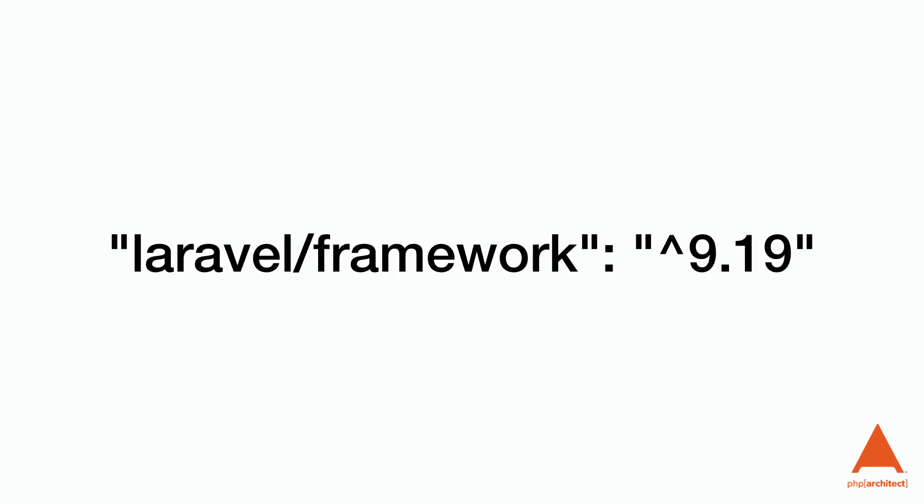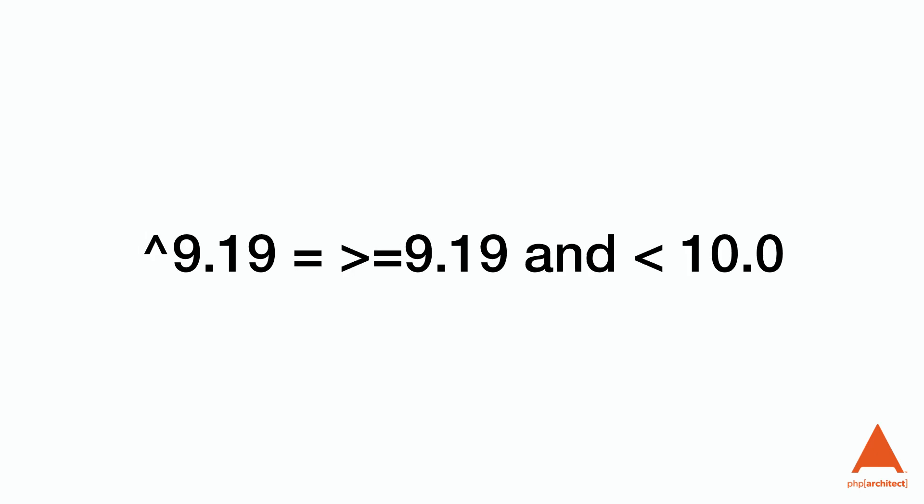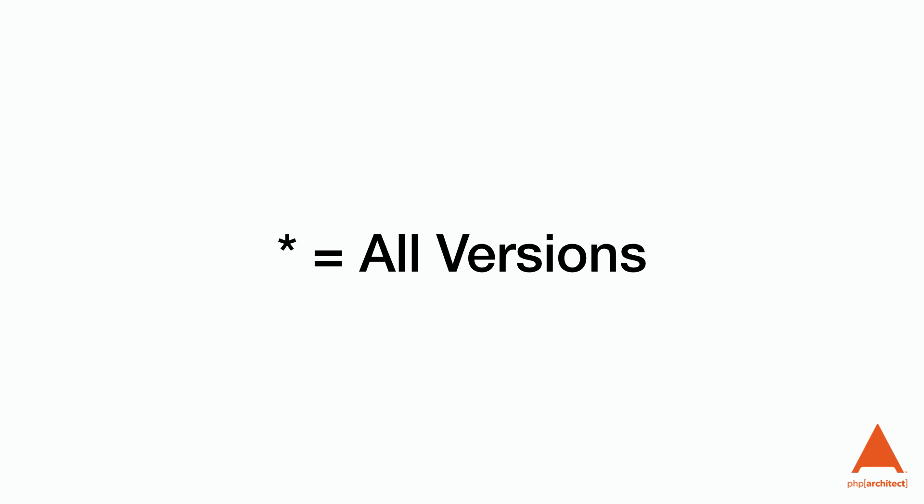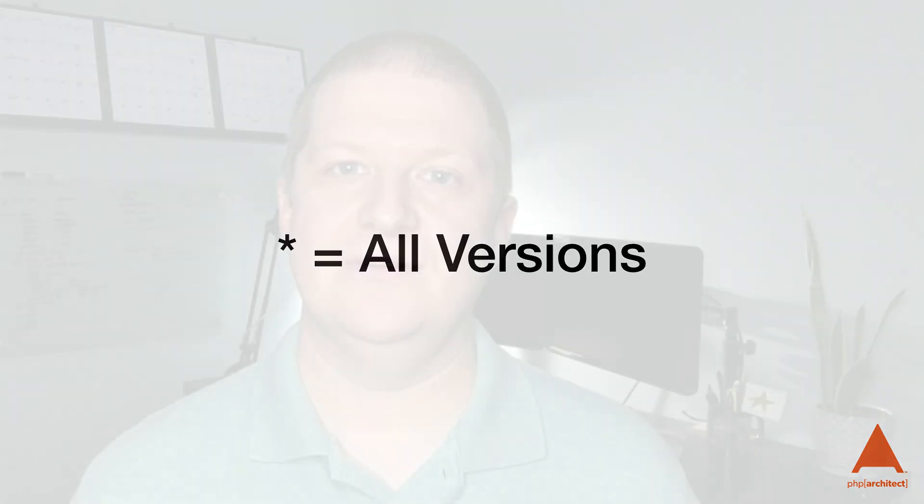If we look into a composer.json file for a Laravel project, we'll see lots of libraries listed. For example, we'll see laravel/framework: ^9.19. The caret at the start will keep us locked into the 9 major release branch, so we don't accidentally upgrade to a new major release and break our application. We can also use the tilde character to lock us into the current minor release. Another option is the asterisk character for any version. This is helpful for command line tools not tightly coupled to our software, like PHP Code Sniffer.